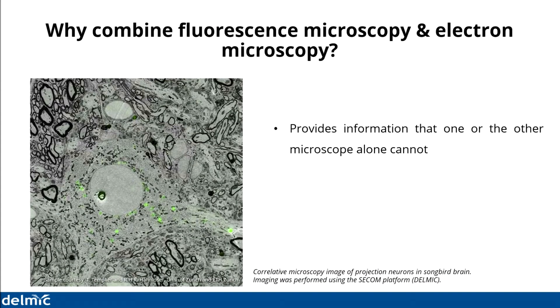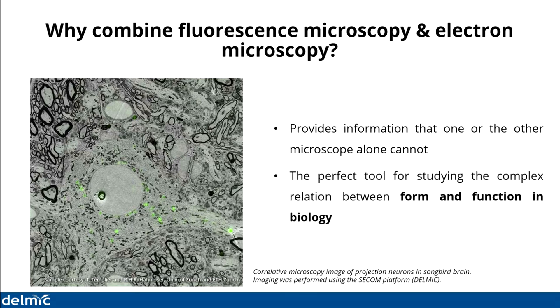CLEM, or Correlative Light and Electron Microscopy, is a technique which is a combination of these two imaging techniques. We want to combine them because CLEM gives us the advantages of both — it provides information that one or the other microscope alone could not. As you can see in this image of the neural connections in the songbird brain, in green you can see the optical image, which is available in the context of the cellular ultrastructure visible in grayscale from the electron image. Using such CLEM images, researchers can understand the complex relationship between form and function by visualizing functional information in the context of structural information.